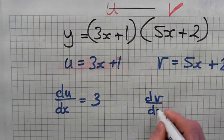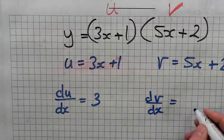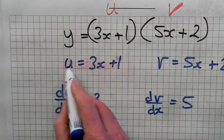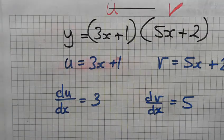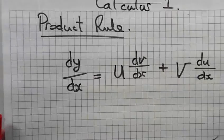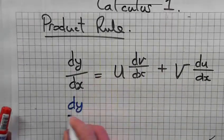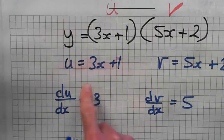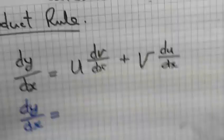dv/dx. Differentiate 5x and you get 5. So we're going to use this information to fill in our formula. You start: write down dy/dx equals u, which is 3x plus 1, times dv/dx, which is 5, plus v, 5x plus 2, times du/dx, which is 3.